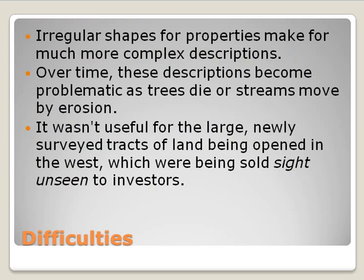There are some difficulties with metes and bounds. One is that the irregular shape of property makes descriptions very complex. Another problem is that many boundaries used, especially in historic metes and bounds, are subject to erosion and change over time. For example, if you reference Bill's house, the old oak tree, or the edge of a river — those landmarks can disappear or shift. Metes and bounds are developed by people already on the landscape who walked the land and claimed the area they wanted, so it couldn't be applied to the far west where people hadn't yet been.